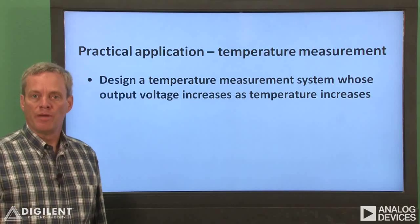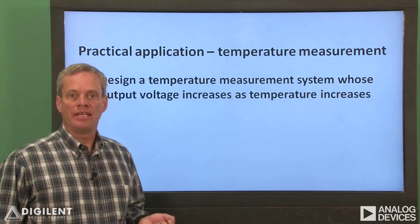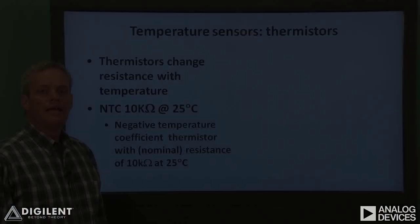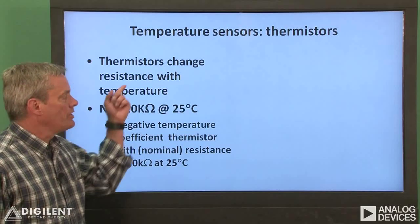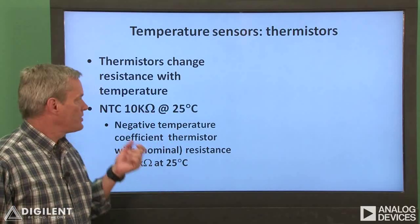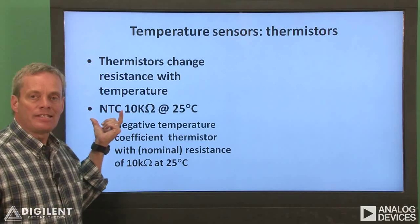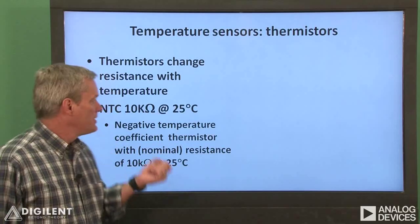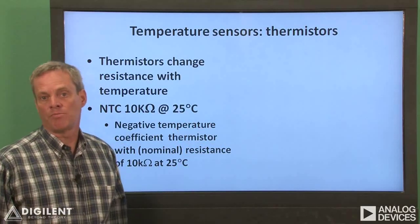Our second application will be temperature measurement. The goal of the circuit we're going to build here is to output a voltage which increases with increasing temperature. Circuits of this type are common in heating and air conditioning systems. We're going to use a thermistor for our application. Thermistors change their resistance as a result of temperature changes. The thermistor in our analog parts kit is an NTC 10 kilohm at 25°C thermistor. NTC stands for negative temperature coefficient, meaning the resistance decreases as temperature increases. At 25°C, the thermistor's resistance is approximately 10 kilohms.